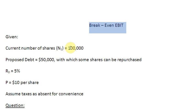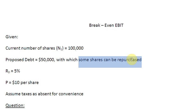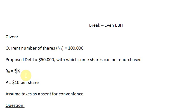A firm has 100,000 shares to begin with, and it is considering borrowing a sum of $50,000 to repurchase some shares. If the firm goes ahead and borrows $50,000, it will pay interest at the rate of 5%, which is our RD, that is cost of debt. The shares are currently trading at $10 per share, so P equals $10 per share. We are going to assume taxes to be absent from the picture.